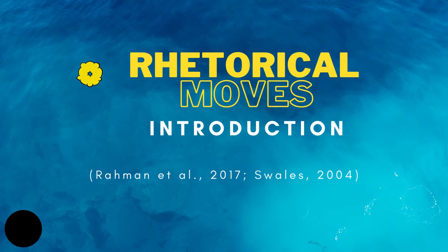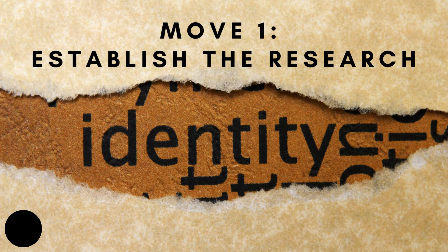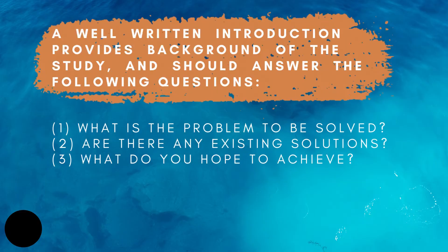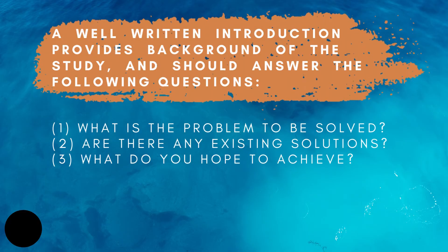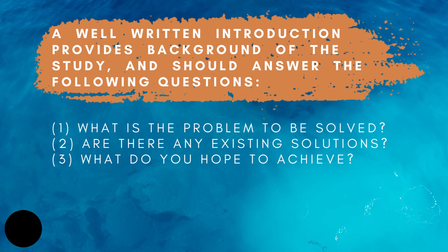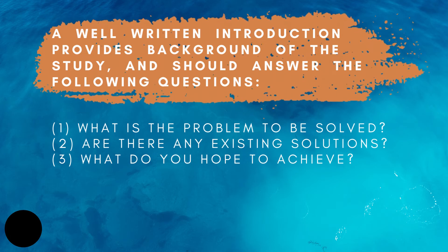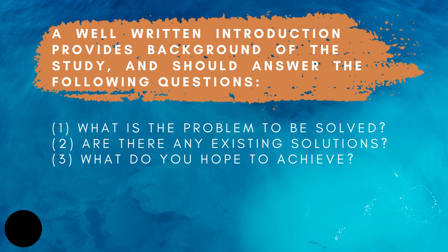To organize the research you've found, we use the three rhetorical moves in the introduction, from Swales. Move one is called establishing the research identity. Since you are looking for different empirical research papers to get ideas from, this is where you establish the research identity. A well-written introduction provides the background of the study and should answer: What is the problem to be solved? Are there existing solutions? What do you hope to achieve?